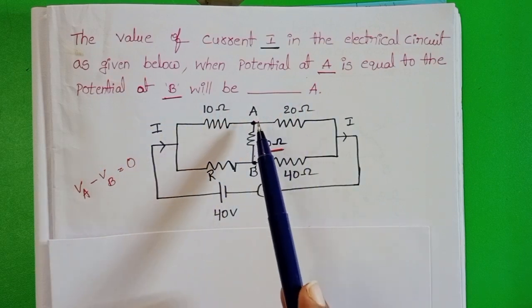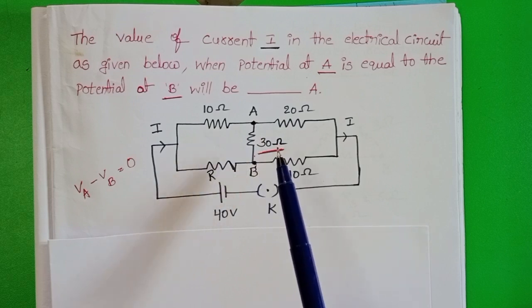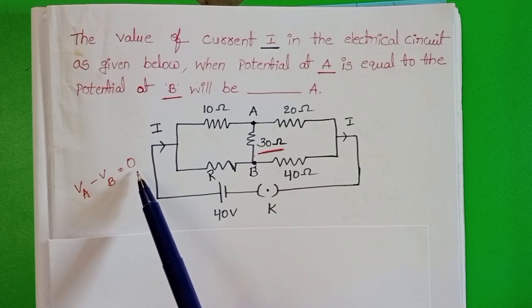In this circuit, at point A and point B, potential is same. There is no potential difference. VA minus VB equals 0.